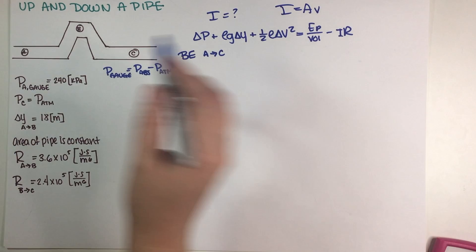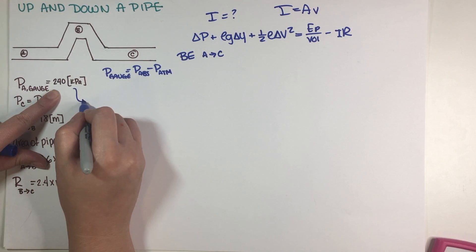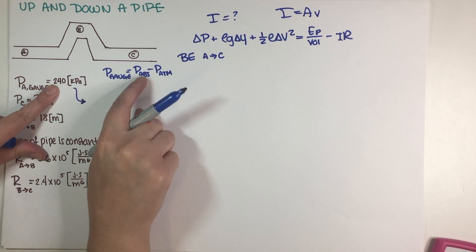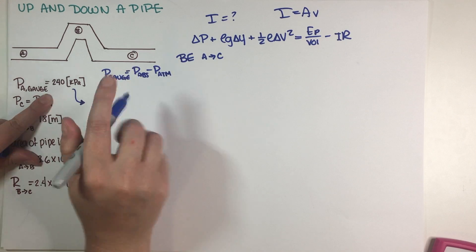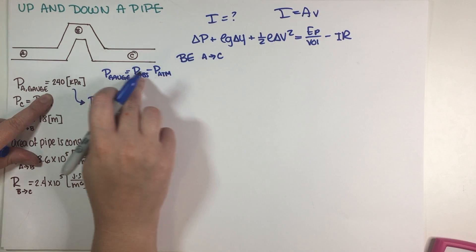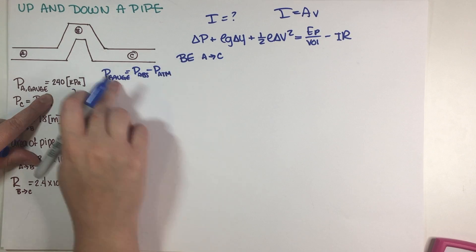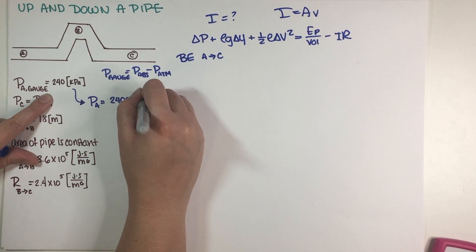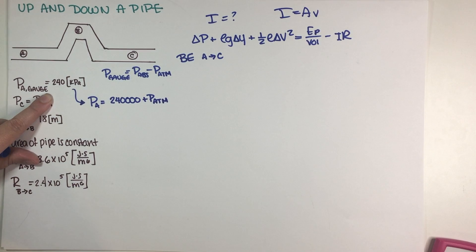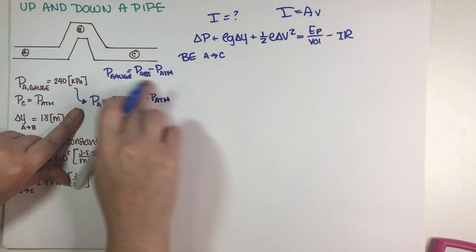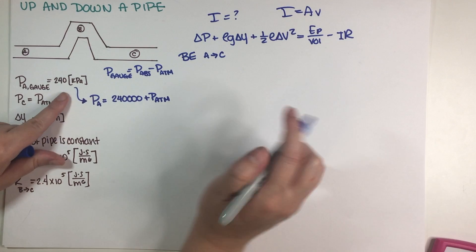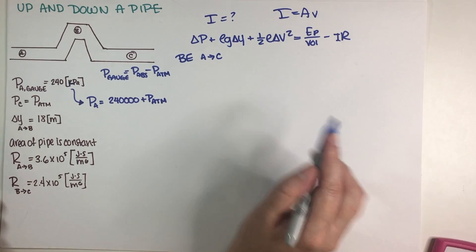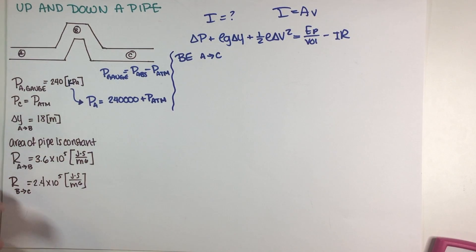So I'm going to take the gauge pressure at A and convert it to absolute. Gauge equals absolute minus atmospheric, so absolute equals gauge plus atmospheric. That means the absolute pressure at A is 240,000 pascals plus atmospheric pressure. I just added the three zeros to convert from kilopascals, and now we can start putting in numbers.